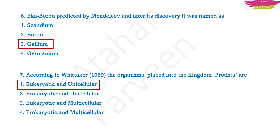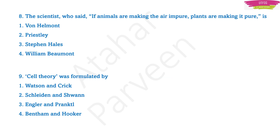I really hope that you all are watching this class attentively because all the multiple choice questions I am discussing here are most expected questions. Question number eight: the scientist who said 'if animals are making the air impure, plants are making it pure' — he is Stephen Hales. Stephen Hales is famously known for this statement.